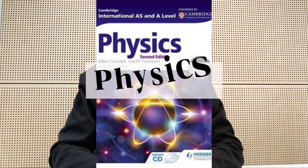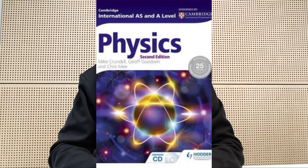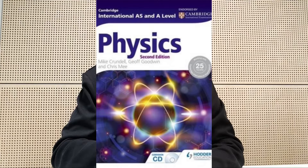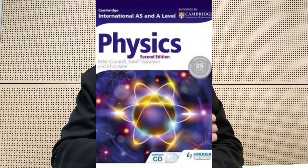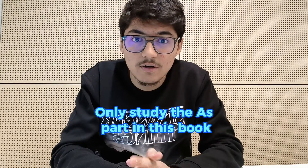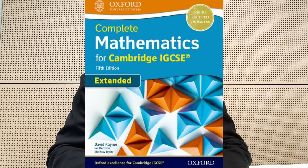Moving to physics, you're going to use the A-level Cambridge second edition, but bear in mind that IMAT physics and A-level physics are very different, so you're going to use the A-S part of the A-level book. For maths, the book I used was IGCSE Maths second edition.